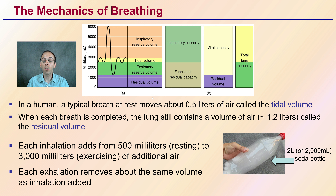The mechanism of breathing in humans: a typical breath is about half a liter, which is called your tidal volume. When each breath is completed, the lung still contains a volume of air — about 1.2 liters — called the residual volume. Each inhalation adds about 500 milliliters at rest, or 3,000 milliliters during exercise. Each exhalation removes the same volume as inhalation added.